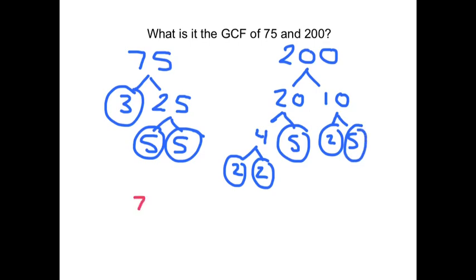So, 75 is equal to 3 times 5 times 5. And 200 is equal to 2 times 2 times 2 times 5.